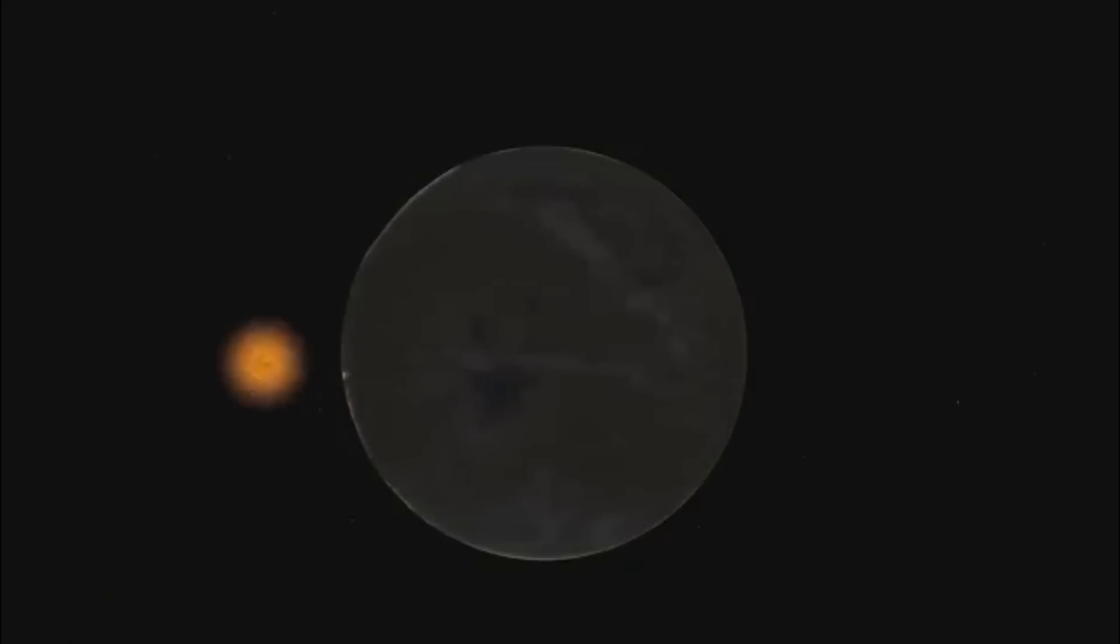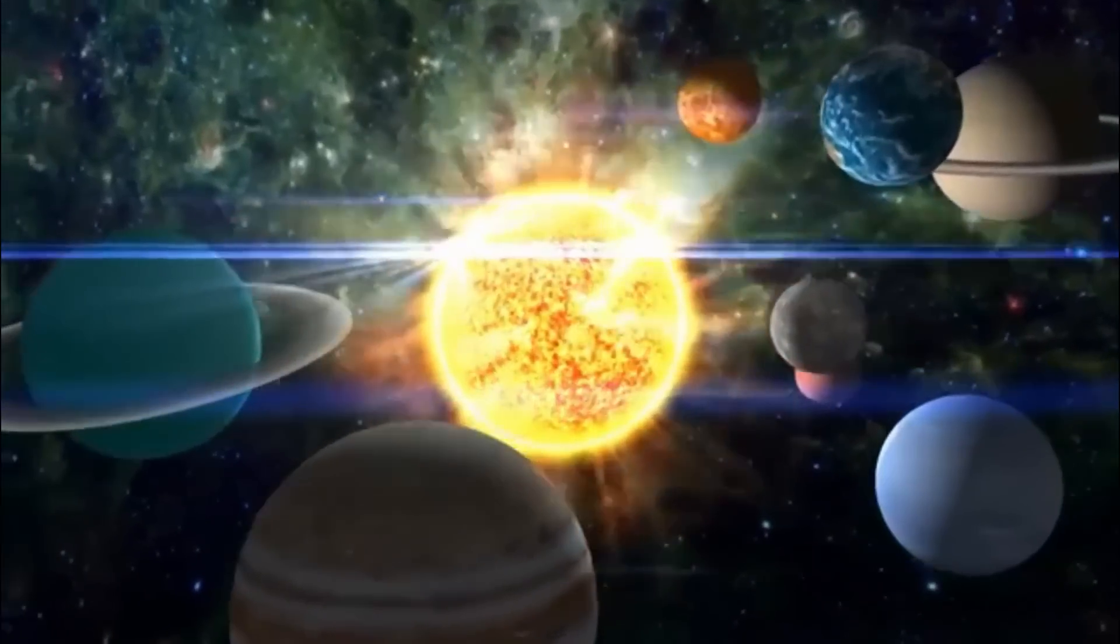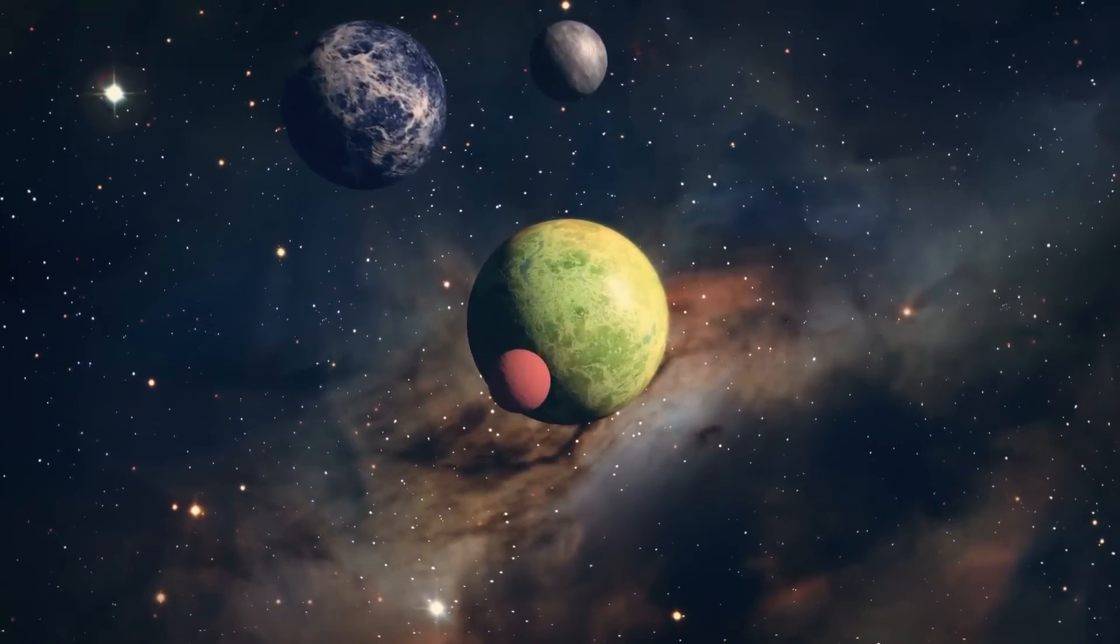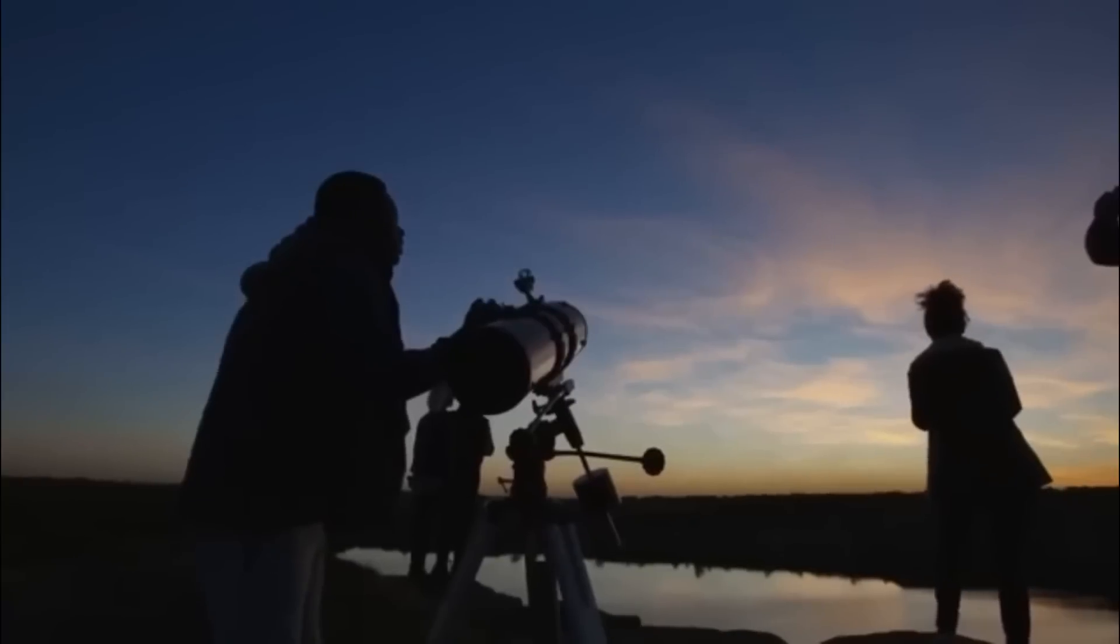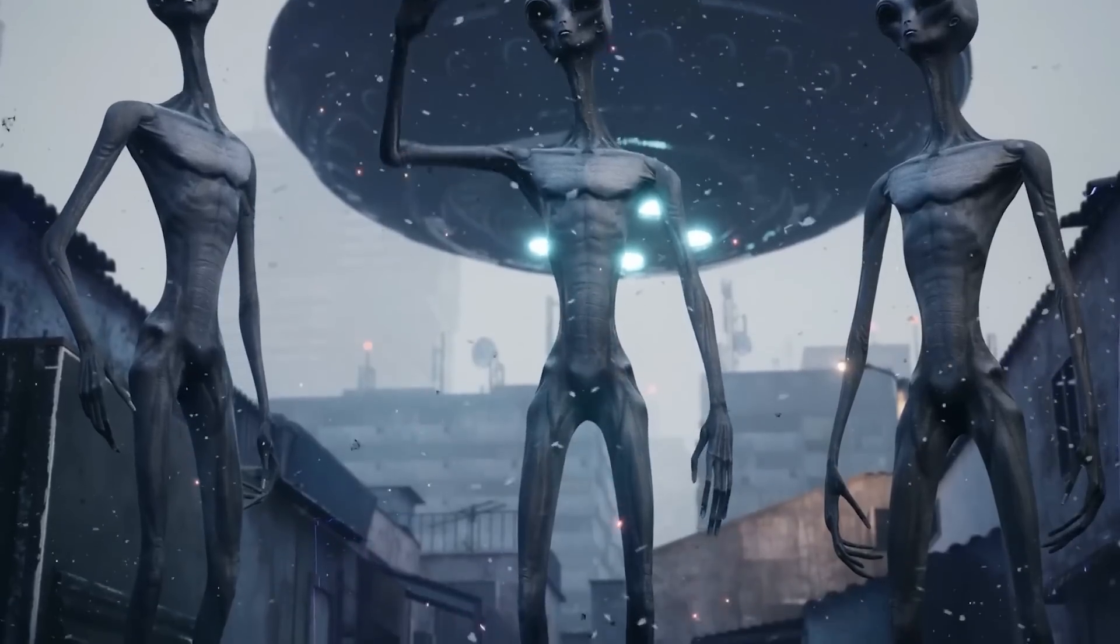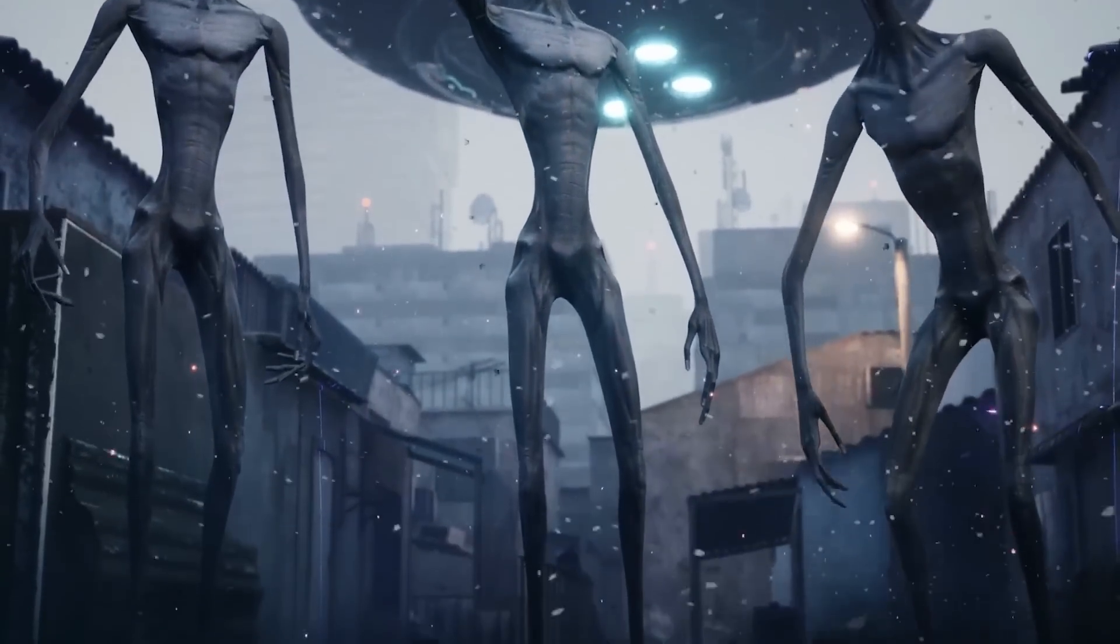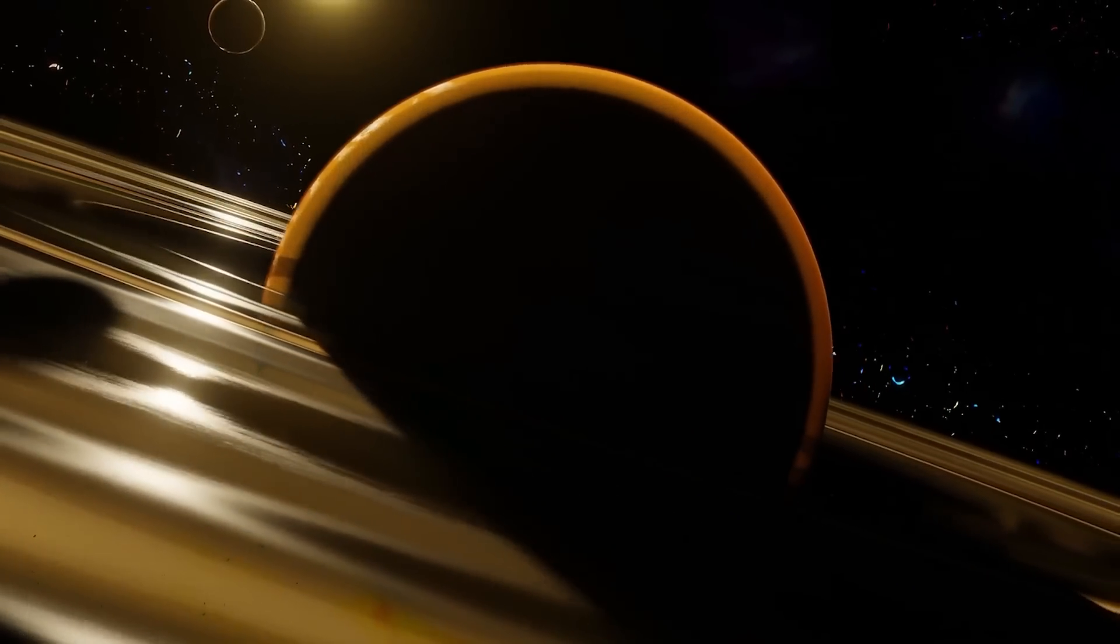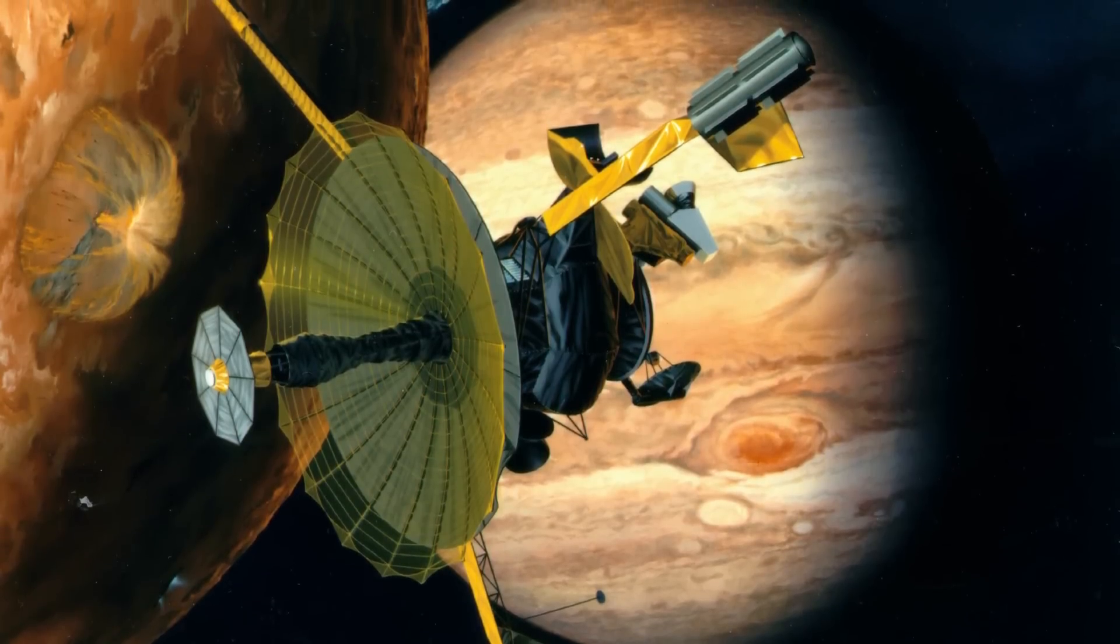Despite being smaller and cooler than the Sun that warms our Earth, the TRAPPIST-1 star sends out a gentle light that could support life. By studying the light emitted by this star, scientists hope to unlock clues about the living conditions that might exist within the TRAPPIST-1 planetary system.